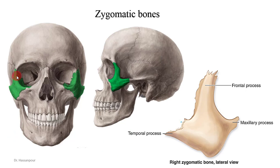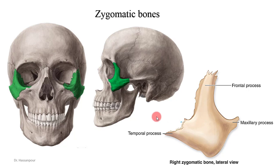Moving on to the other walls of the orbit — as you can see in this image, the inferior and lateral borders of the orbit are formed by the paired zygomatic bones. Remember that the superior borders of the orbit are formed by the frontal bone, which is part of the neurocranium. The zygomatic bones protrude laterally forming eminences on the face called cheekbones. Each zygomatic bone is comprised of three parts named according to the bones they articulate with: the frontal process, the temporal process, and the maxillary part, which refers to the part of the bone that communicates with the maxillary bone.